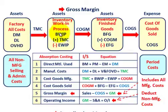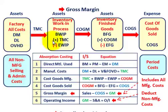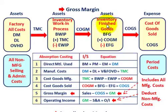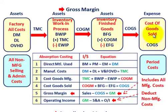To calculate cost of goods manufactured, we take beginning work-in-process inventory, add total manufacturing costs — all factory costs — and subtract ending work-in-process. That gives us cost of goods manufactured. Then for finished goods, we take beginning finished goods, add cost of goods manufactured, subtract ending finished goods, and that gives us cost of goods sold, which we expense against sales for the period.